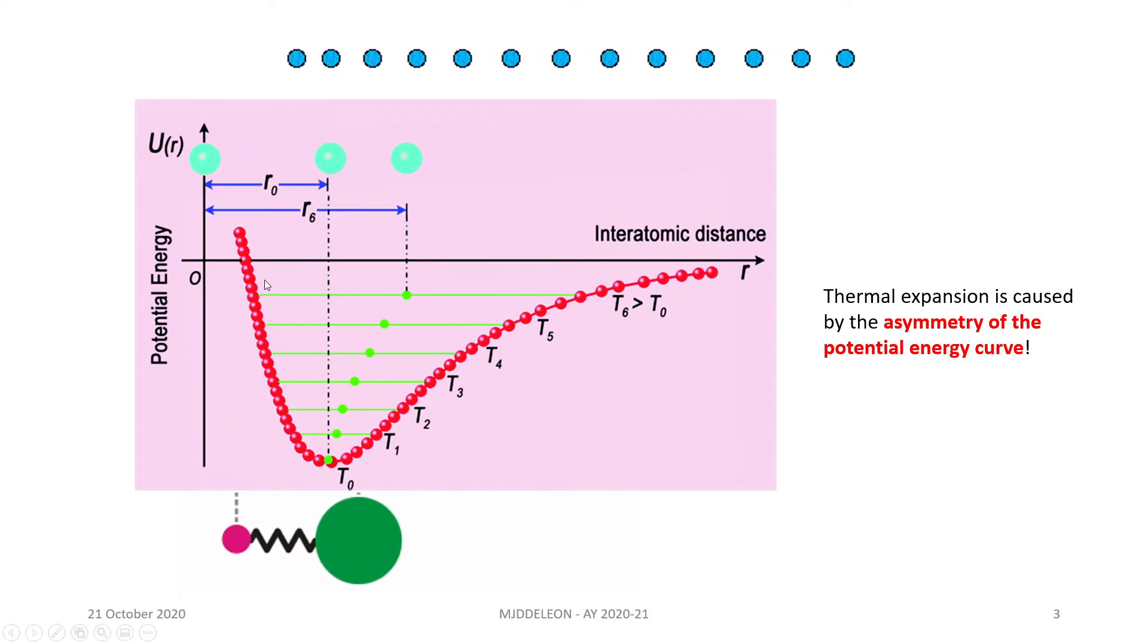So now, this asymmetry in our potential energy curve would lead then to the thermal expansion of our system. And based on how the shape of that potential energy curve is, you can see that it will affect the thermal expansion properties for our materials.